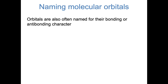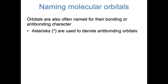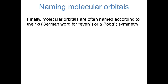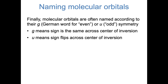The names of molecular orbitals also often tell us whether those orbitals are bonding or antibonding. An asterisk, or star, is often used to denote antibonding orbitals. So when you see a sigma orbital and a sigma star orbital, the sigma orbital is bonding and the sigma star orbital is antibonding. You can also see that there's sometimes a subscript — in this case 1s — that indicates which atomic orbitals form those molecular orbitals. Finally, I want to mention the distinction between g and u orbitals, or even and odd orbitals. An even orbital, represented by the letter g, means that the sign of the orbital is the same when you go across the center of inversion, and u represents an odd orbital where the sign flips when you go across the center of inversion.